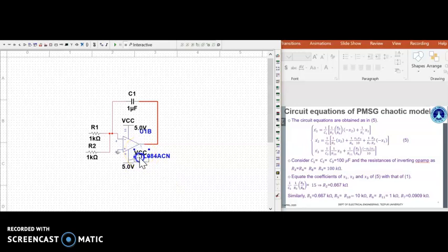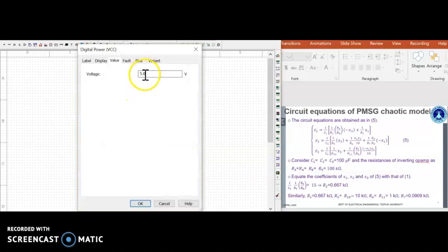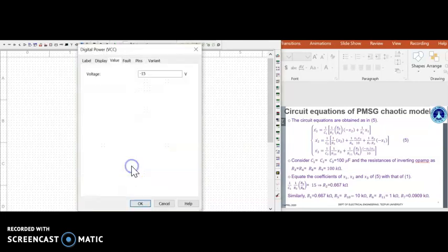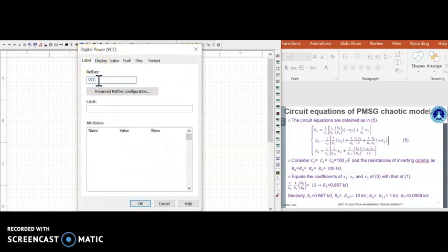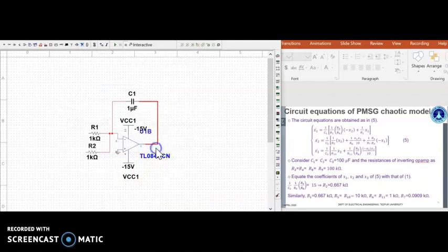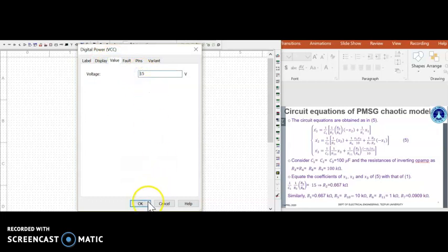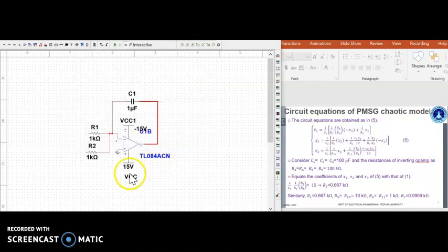I am going to put it here for clarity. I am going to change this to minus 15. This one, I am going to change it to label VCC1. And value, I am going to give it plus 15V, minus 15V.